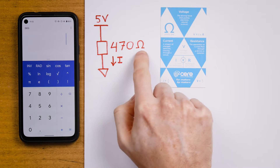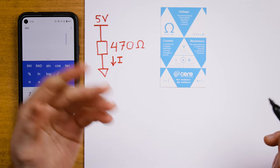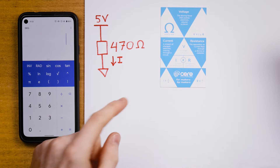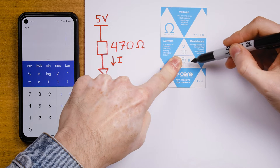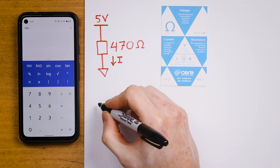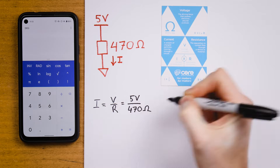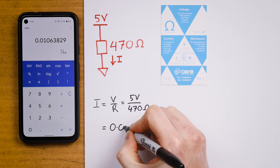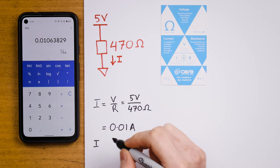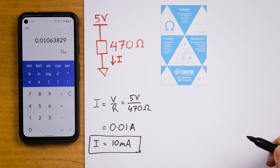Now for a practical example. Here I have a circuit with a 470 ohm resistor that has 5 volts across it. If I want to solve for the current flowing through that resistor, I equals V on R equals 5 volts over 470 ohms. 5 divided by 470 — the current flowing through the resistor is 0.01 amps, which is equal to 10 milliamps.